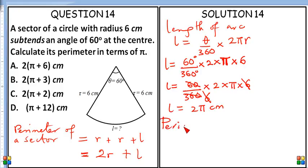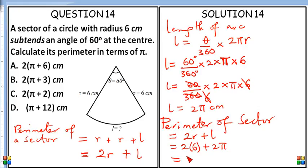Now the perimeter that we are actually asked to find is going to be perimeter of sector, which is 2R plus L. That is 2 into bracket 6 plus 2π, and that's going to be 12 plus 2π.